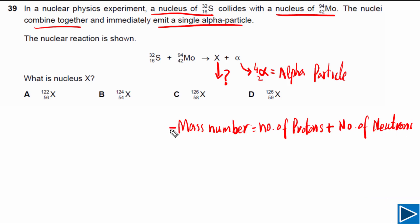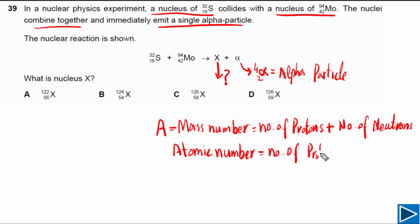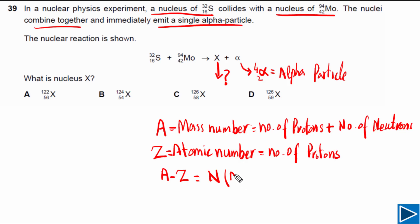The symbol we use for mass number is capital A. Atomic number is simply equal to the number of protons in the nucleus, and the symbol we use for atomic number by convention is Z. If we subtract the atomic number from the mass number, we can find the number of neutrons, represented by N.